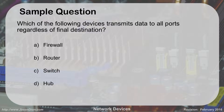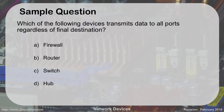Review question: which of the following devices transmits data to all ports regardless of the final destination — a firewall, a router, a switch, or a hub? A hub, right? That's the example of Sarah wanting to talk to Joe: the hub just says 'everybody cover your ears, I'm talking to Joe,' and trusts that you're not listening. With a switch, they'd be put on a private call so only they could talk. So the answer is a hub.